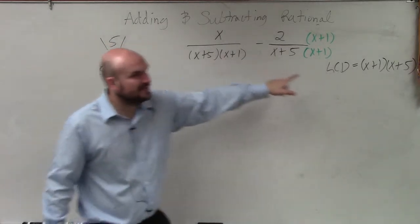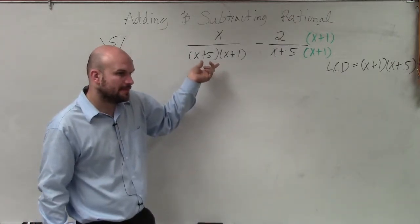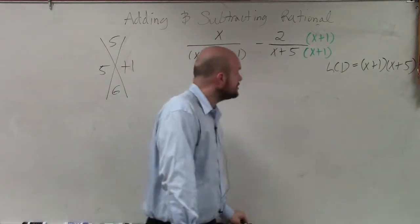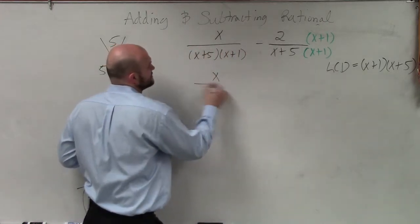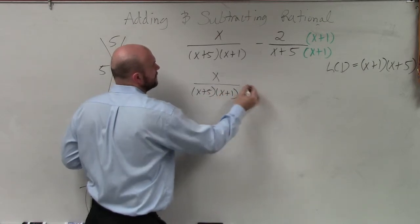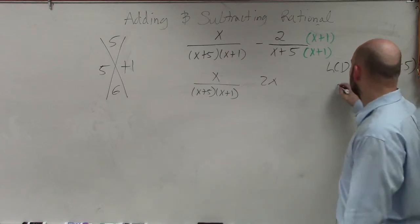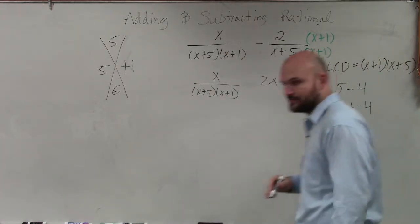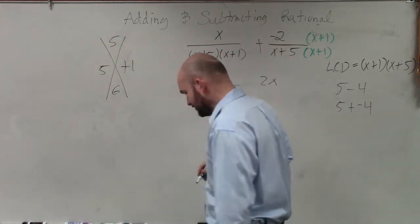This is already your LCD, so you don't need to do anything to it. Do you see that? So now I multiply my other side here. So I have x over (x+5)(x+1) minus 2... Also make sure, another thing to remember is 5 minus 4 can be written as 5 plus negative 4. Does everybody agree with me? So therefore I'm going to change my subtraction problem into an addition problem.